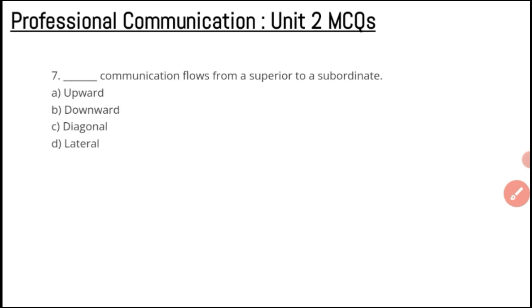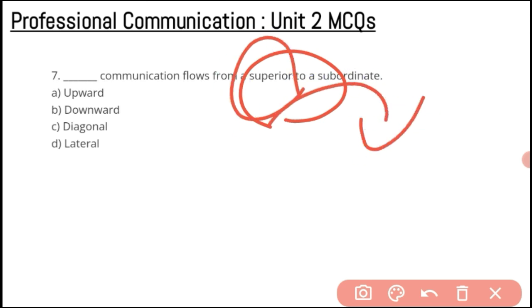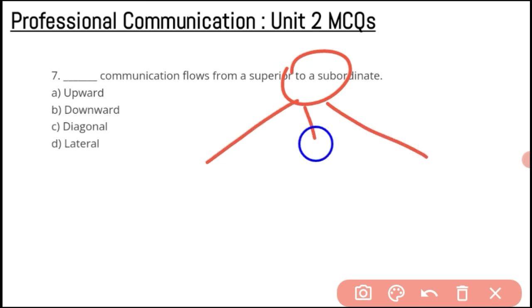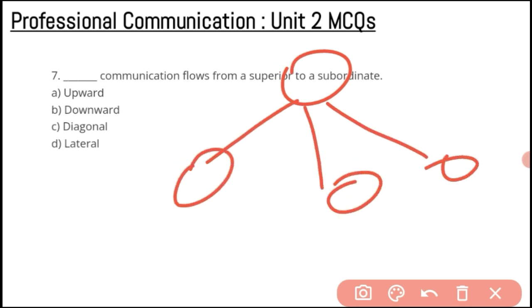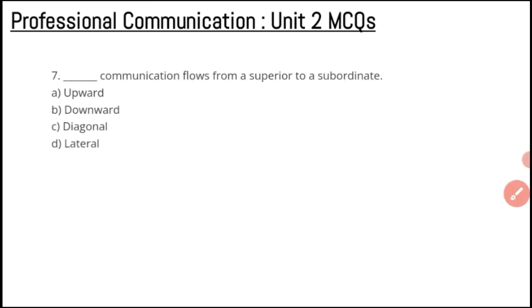Question number seven: which type of communication flows from a superior to the subordinate? If information is with a superior and it goes down to all the subordinates, that is downward communication — information flowing from the top going down. Option B, downward communication, is the correct answer for question number seven.